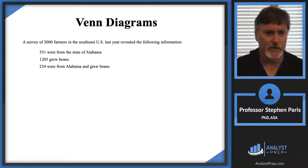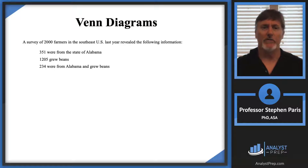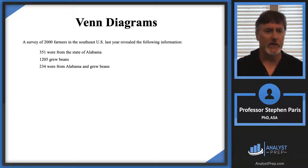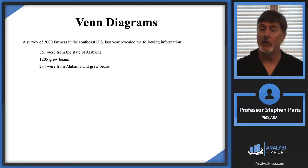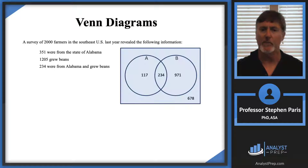So let's say we got a survey of 2,000 farmers in the U.S. 351 were from the state of Alabama and 1,205 grew beans. 234 were from Alabama and grew beans. So we've seen this example before with our Venn diagram.